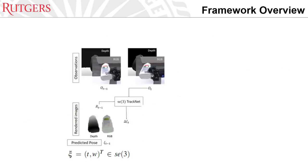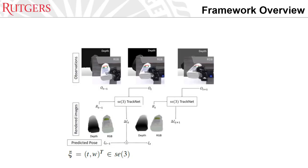Here is our framework overview. At each timestamp, we first use the previously estimated pose y_{t-1} to render RGB-D data r_{t-1}, and we also have the current observation o_t. By sending these two inputs to the SC3 TrackNet, it provides us with the delta transform. This delta transform is accumulated with the previous estimate, which gives us the current estimated pose. We then use the current estimated pose to render the image, and in the next frame we have the true observations. We repeat this process again and again on the entire video sequence.